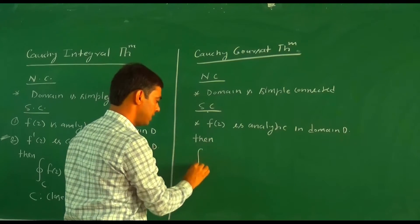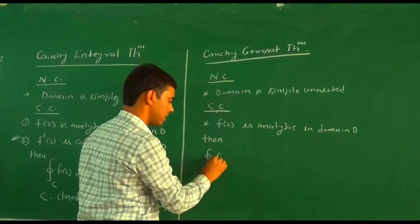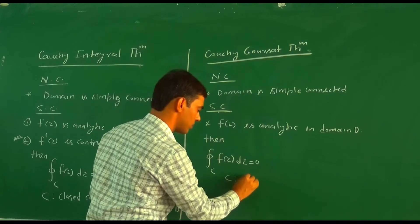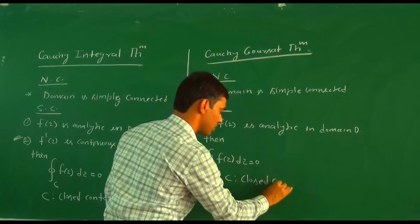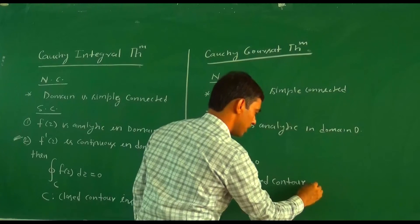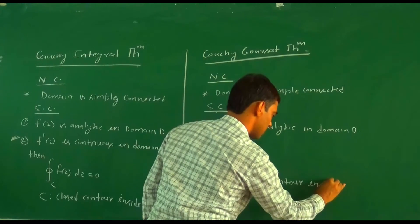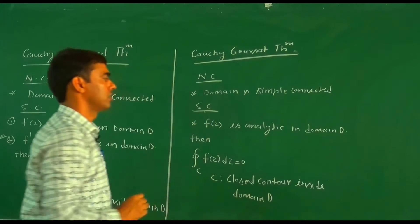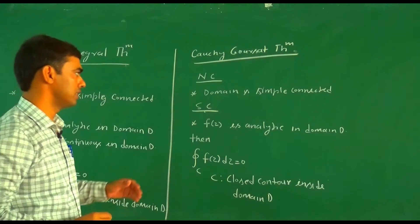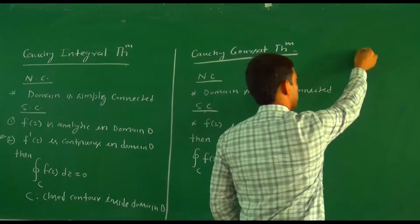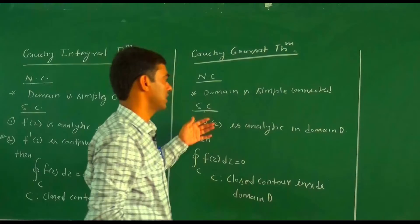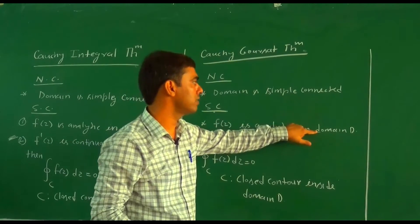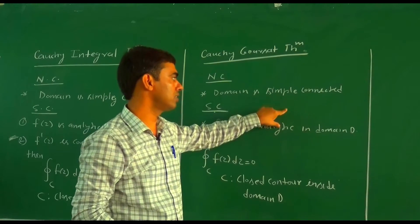So with only one sufficient condition — f(z) is analytic in domain D — then the integral over C of f(z) dz equals zero, where C is a closed contour inside domain D. In simple language, combining the necessary and sufficient condition: f(z) is analytic in a simply connected domain.